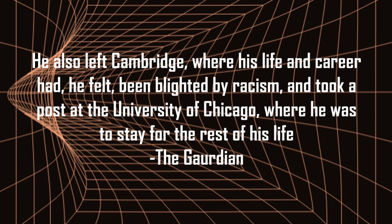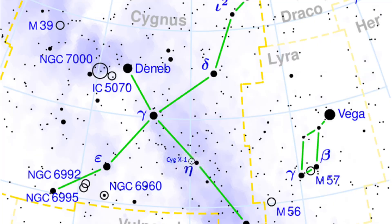Despite this, Chandra was defamed. Worried that his work would never be taken seriously again, he moved into other fields. He left Cambridge, where he felt his life and career had been blighted by racism, and took a post at the University of Chicago where he stayed for the rest of his life. In 1972, scientists detected a black hole trillions of miles away from Earth, and Chandra was finally proven right — 40 years after his discovery. In 1983, he won the Nobel Prize.